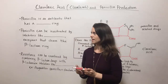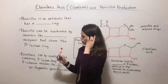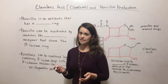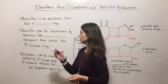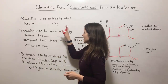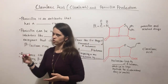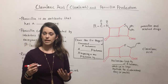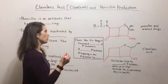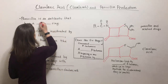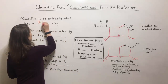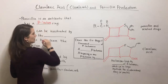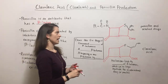So you've probably heard of penicillin, which is an antibiotic that was discovered in the 1920s by Alexander Fleming. It's an antibiotic that is characterized by having a structural component known as a beta-lactam ring.